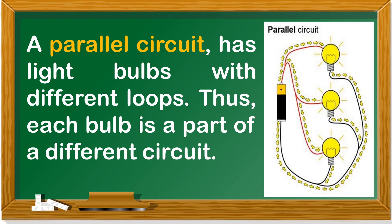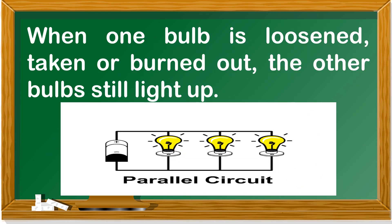A parallel circuit has light bulbs with different loops. Thus, each bulb is a part of a different circuit. When one bulb is loosened, taken or burned out, the other bulbs still light up.